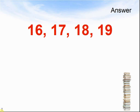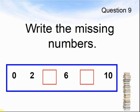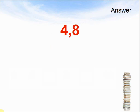Let's look at the next question. Question 9. Write the missing numbers. 0, 2, something, 6, something, 10. What are the missing numbers in this sequence? 0, 2, something, 6, something, 10. Pause the video and work out the answer. Here come the answers. The answers were 4 and 8 — those were my missing numbers.